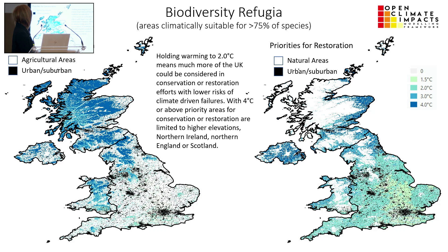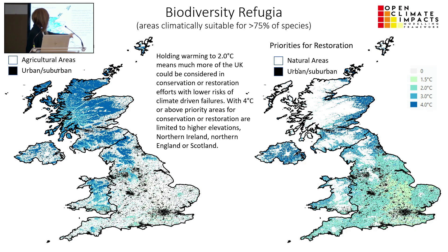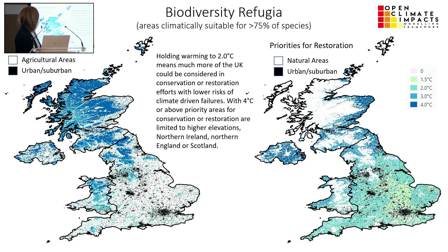Lastly, a more positive message: biodiversity refugia. Where more than half of the models agree that the climate will be suitable for more than three-quarters of the species currently present, we call that a refugia and we've mapped out where they are. The darkest blue ones are refugia at four degrees. The map on the left shows areas that are already natural and currently suitable for biodiversity — priorities for conservation. The map on the right shows areas currently used for agriculture that could be restored. Left map: conserve; right map: potential restoration. That is where, in the absence of other priorities, you could conserve or restore to ensure the integrity of our ecosystems into the future.